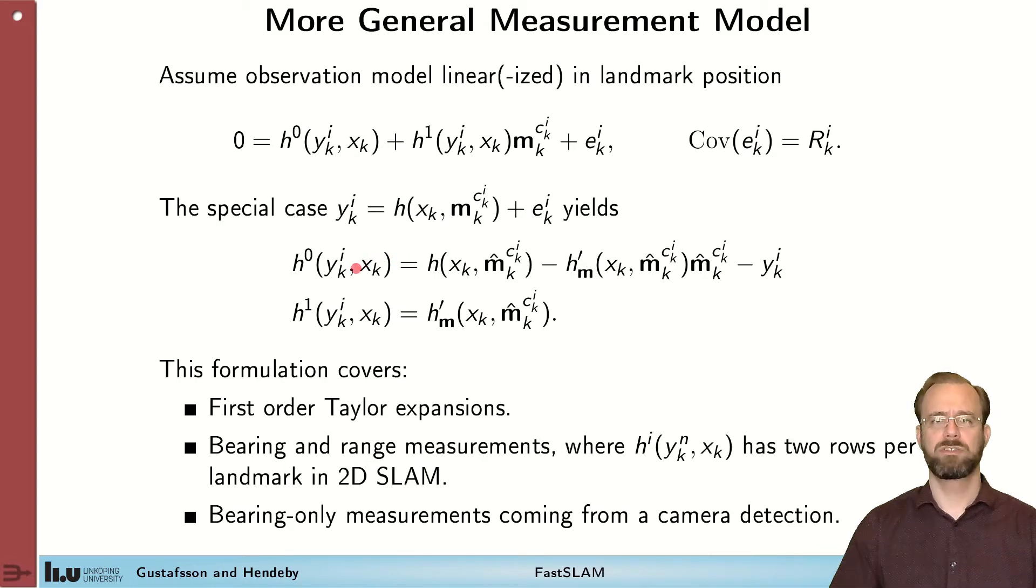The formulation that I've used here covers first order Taylor expansions of most common measurement equations. It fits well with the bearing and range measurements where we have two rows per landmark. And it fits well with bearing only measurements coming from camera detection for example. So it's applicable to all the sensors that we consider.